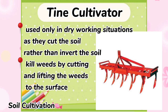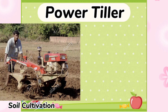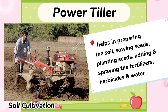Tine cultivators kill weeds by cutting and lifting the weeds to the surface. Power tiller is a two-wheeled agricultural implement fitted with rotary tillers that helps in preparing the soil, sowing seeds, planting seeds, adding and spraying the fertilizers, and herbicides.